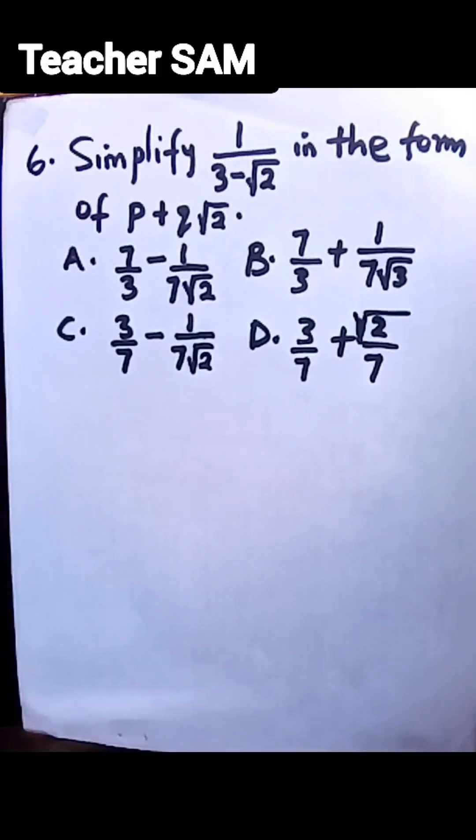Okay, we have another question before us. Question 6: Simplify 1/(3-√2) in the form of p+q√2. Option A: 7/3 - 1/(7√2). Option B: 7/3 + 1/(7√3).